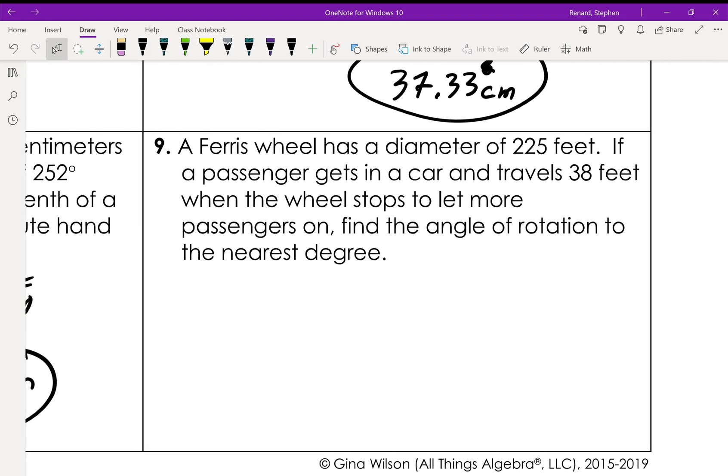Last one. Ferris wheel has a diameter of 225 feet. Let's draw our picture. Diameter is 225 feet. Passenger gets in a car and travels 38 feet when the wheel stops to let more passengers on. Find the angle of rotation to the nearest degree. So this is a little tricky because we're going backwards. So Andy gets on right here in his car, and then he travels 38 feet and stops. He's still in his car. He's got his little bag of popcorn right here. He's like woohoo.